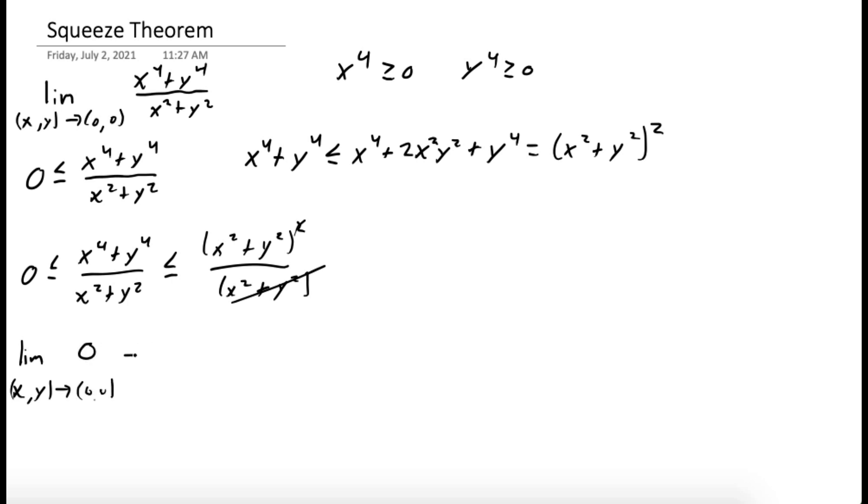Okay, so the limit as x and y goes to 0 of the function 0 is just equal to 0. The limit as x and y go to 0 of the function x squared plus y squared, well we just plug in 0 so it's also 0.